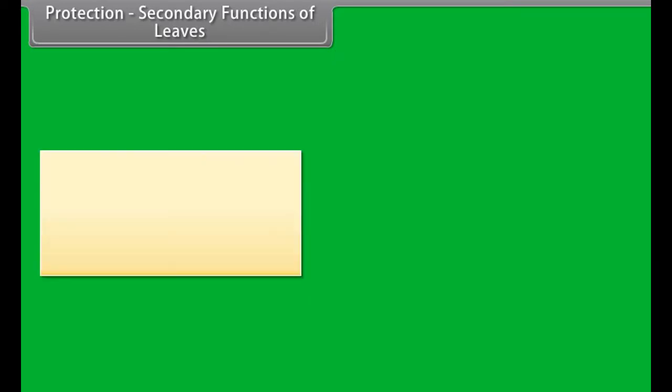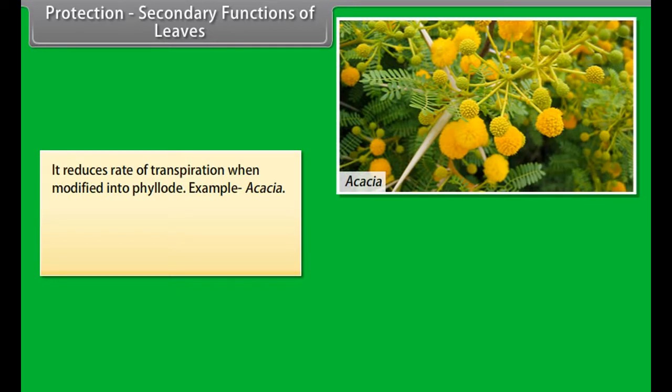Transpiration: The loss of water from the leaf surface is known as transpiration. It is necessary to create force or tension in the water column and thus cause ascent of sap.